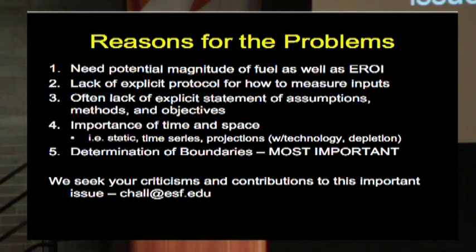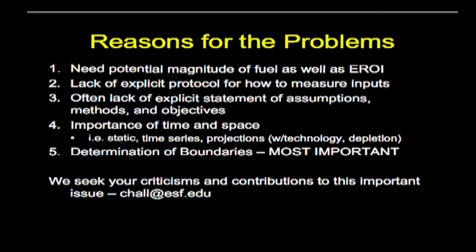What are the reasons for the problems of these huge variants in different estimates that you get from lots of different people? Well, the first thing is you've got to talk about, as Cutler did, the magnitude, the possible magnitude of the fuel, not just their EROI, and certainly not just their economics. There's not an explicit protocol for how to measure the inputs. There's often a lack of an explicit statement of assumptions, methods, and especially objectives — what are we trying to do?